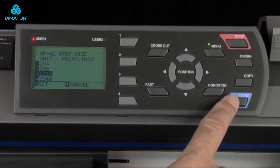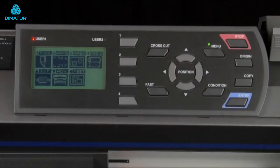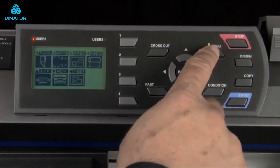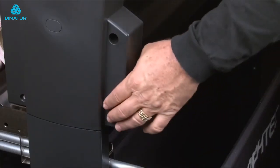Once again, press enter to accept the change. Press the left arrow key, and then press menu. Now that the cutter is set up to communicate with the computer, let's turn the cutter off.